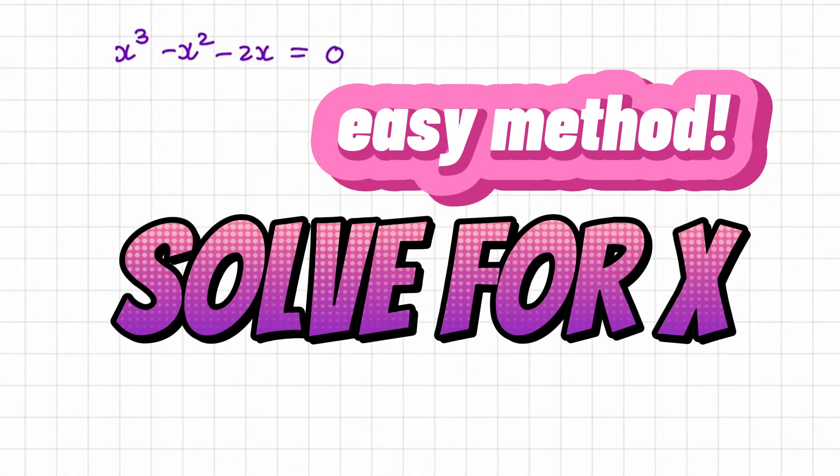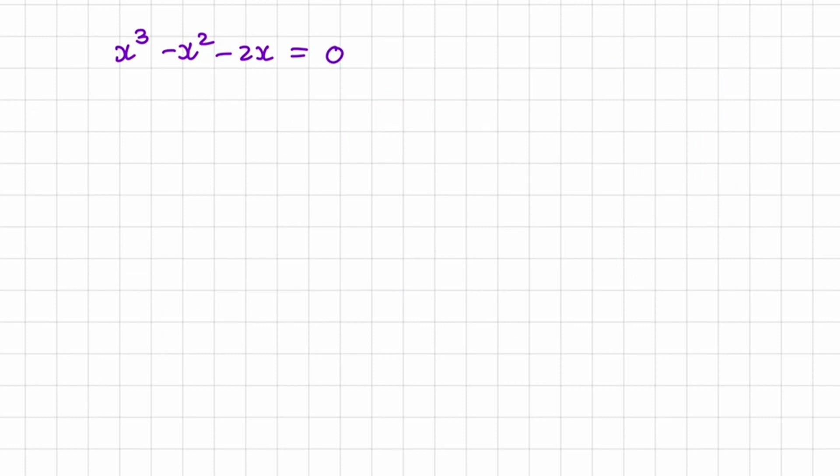Here we have x cubed minus x squared minus 2x equals 0. What I want you to do is inspect every term individually. You would notice that all of the terms have an x in it, so there's a common factor of x.